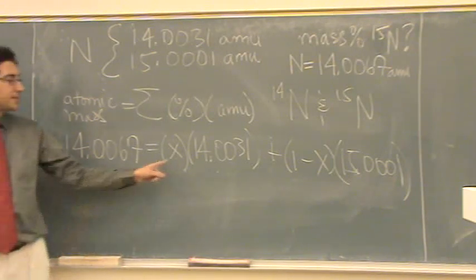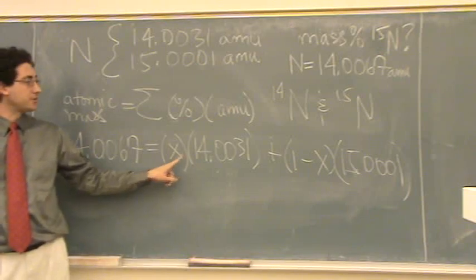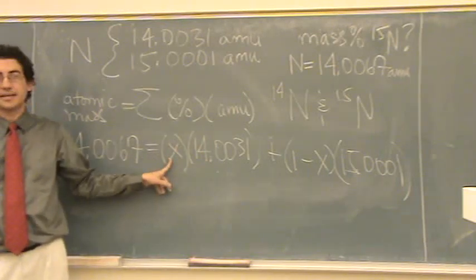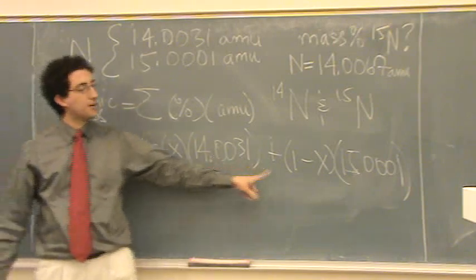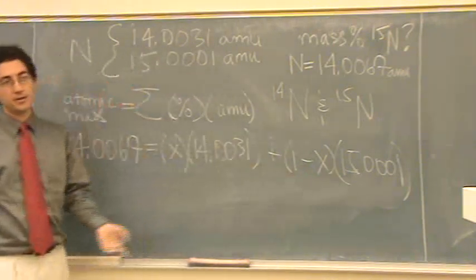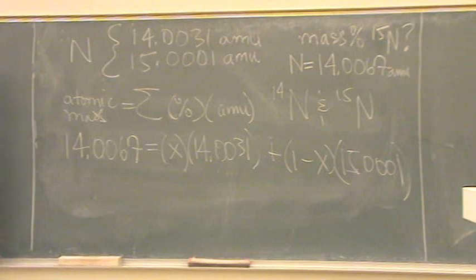We could, like we did here, ask for this one. If there's two, you just set up the decimal, a little equation like this. Or we could ask you for this one, or this one, whatever. But there'd only be one unknown total.